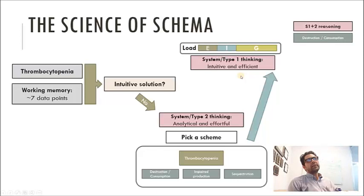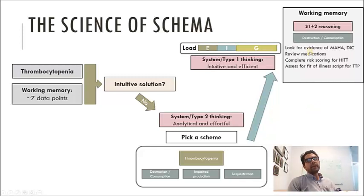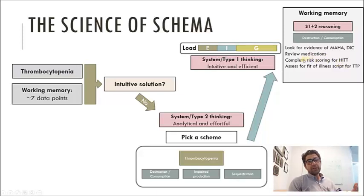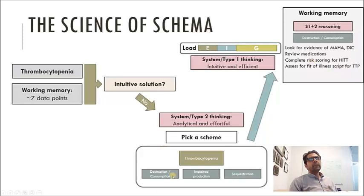Ultimately, I'll combine system one and system two reasoning. I'll use my working memory, pick one arm of the scheme, and work through it — say, destruction/consumption. From there, I can use different reasoning strategies for each diagnostic possibility. If I thought DIC was present, I'd look for evidence of microangiopathic hemolytic anemia. If I thought a medication was causing it, I'd look at the medication list. If I thought there was HIT, I could use a validated score and Bayesian probabilistic reasoning. And I might use illness scripts — for example, does this patient's case fit the illness script for TTP? By using schema, I've freed up brain power to use other types of reasoning.